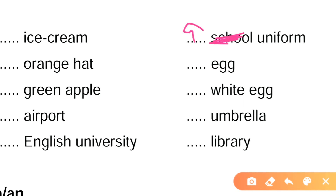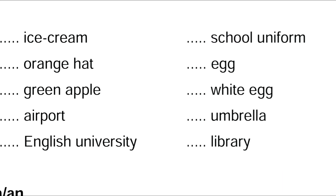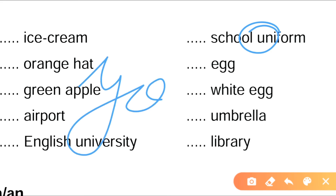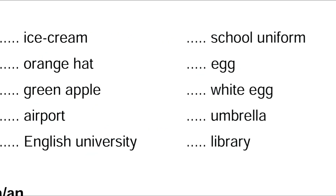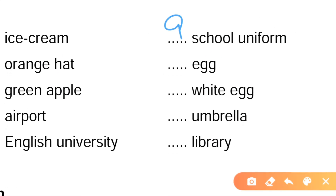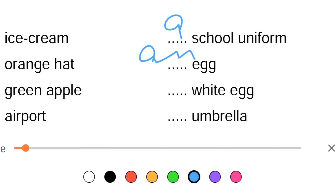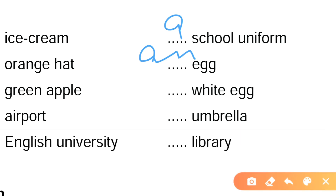Dash egg — very simple. Apple, ice cream, egg — 'an egg'. If we say 'white egg', white gives a consonant sound, so 'a white egg'. Dash umbrella — it gives a vowel sound, so 'an umbrella'. Just concentrate on the sound, not the letters. Dash library — 'a library'.